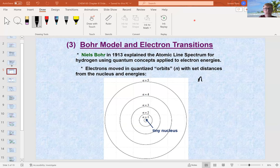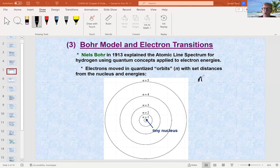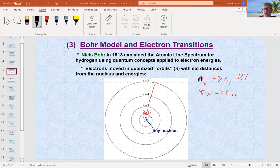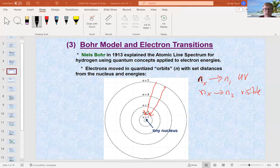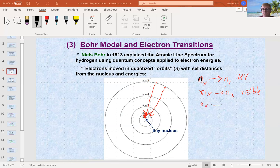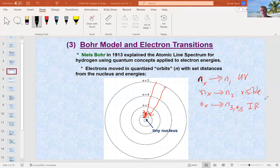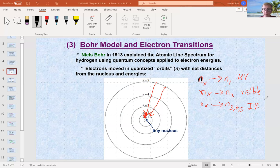There's some transitions that's probably a good idea to just get a feel for now. So if you go from N x down to N1, that's always ultraviolet. So whenever you go from a higher level down to N equals 1, it's always ultraviolet. If you go from N x down to N equals 2, it's always visible. So any higher orbit down to N equals 2, it's always visible. If you go from N higher value down to N equals 3, 4, 5, whatever, it's always infrared. So there are the three I would remember. N equals 1 ultraviolet, N equals 2 visible, N equals 3 or higher infrared.